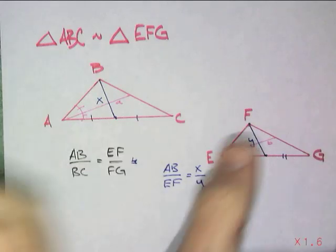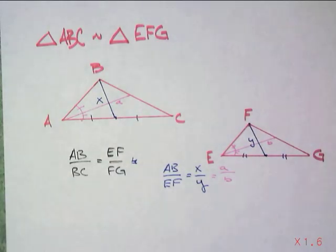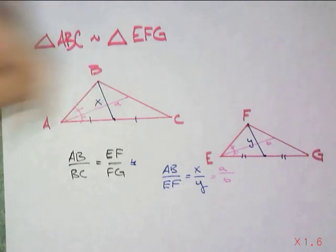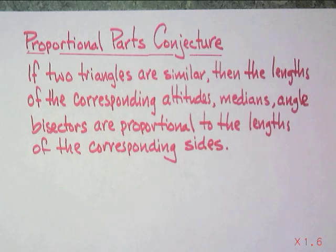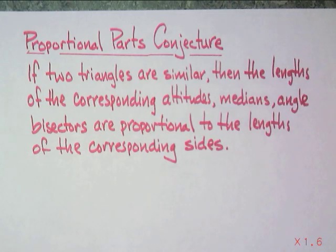Because if I dilated this up, it would match exactly. Anything you want to do — if you made a perpendicular from B down, and did the same thing to the other similar triangle, it would still be that same ratio. So in general: the Proportional Parts Conjecture. If two triangles are similar, then the lengths of the corresponding altitudes, medians, angle bisectors — anything you do the same way on the similar triangle — are proportional to the lengths of the corresponding sides.